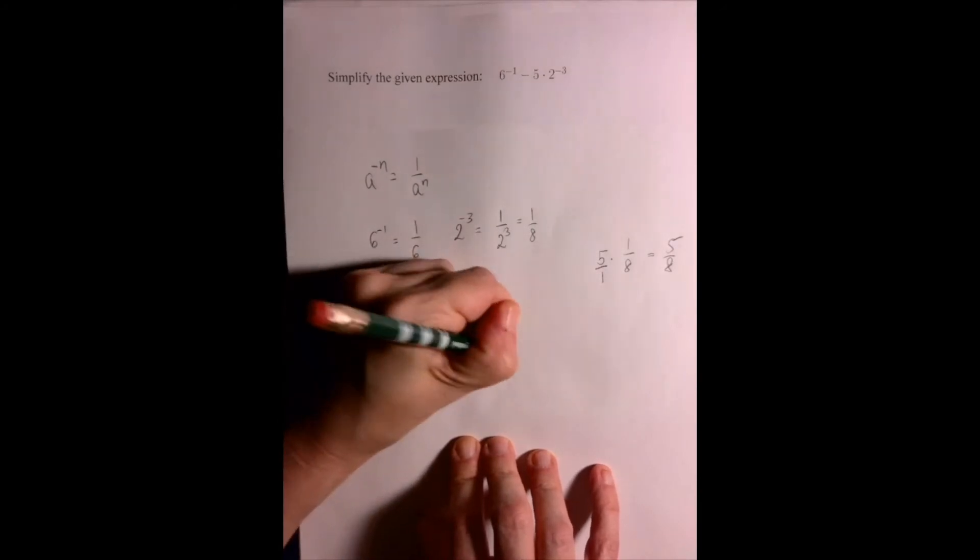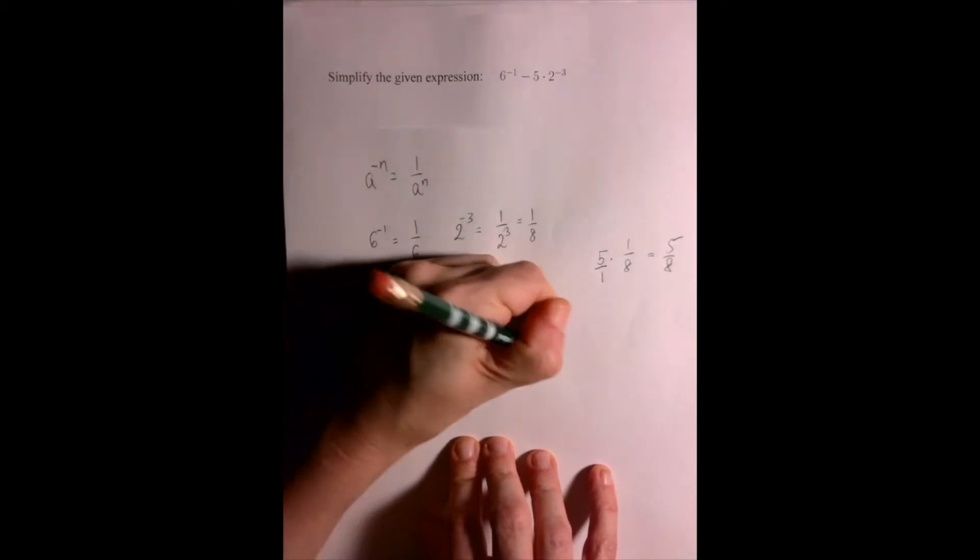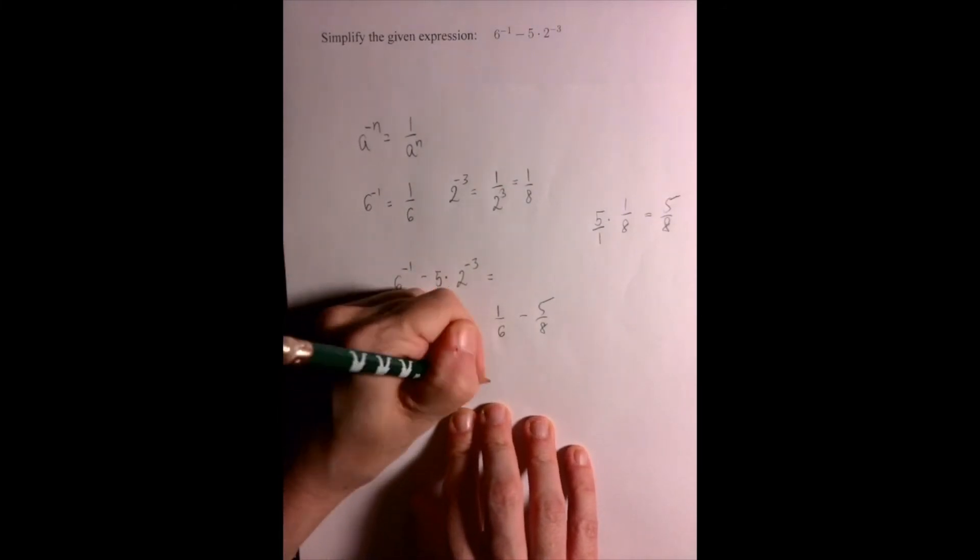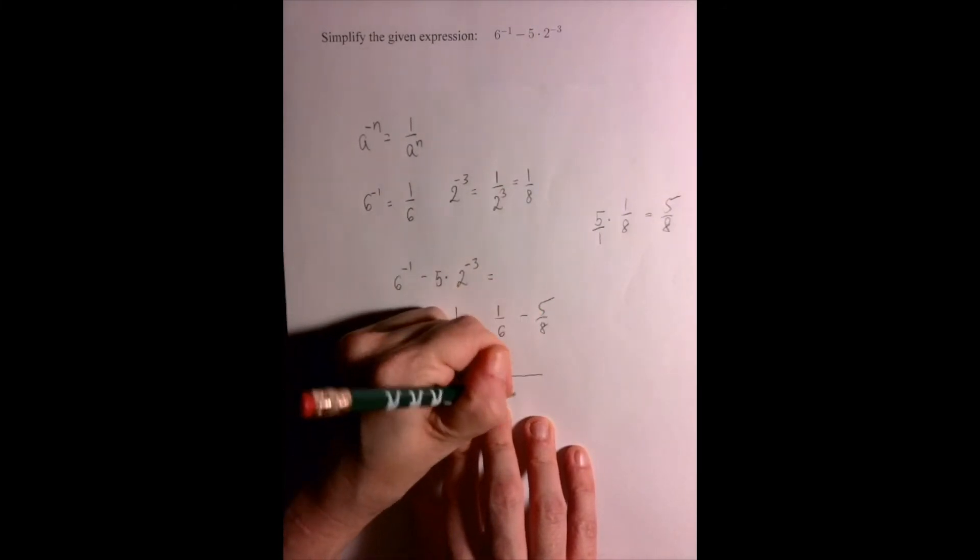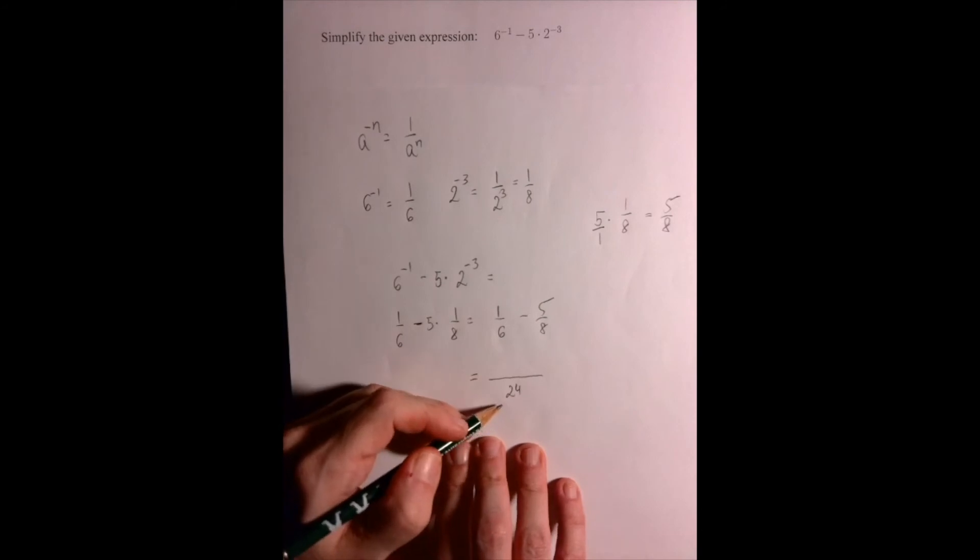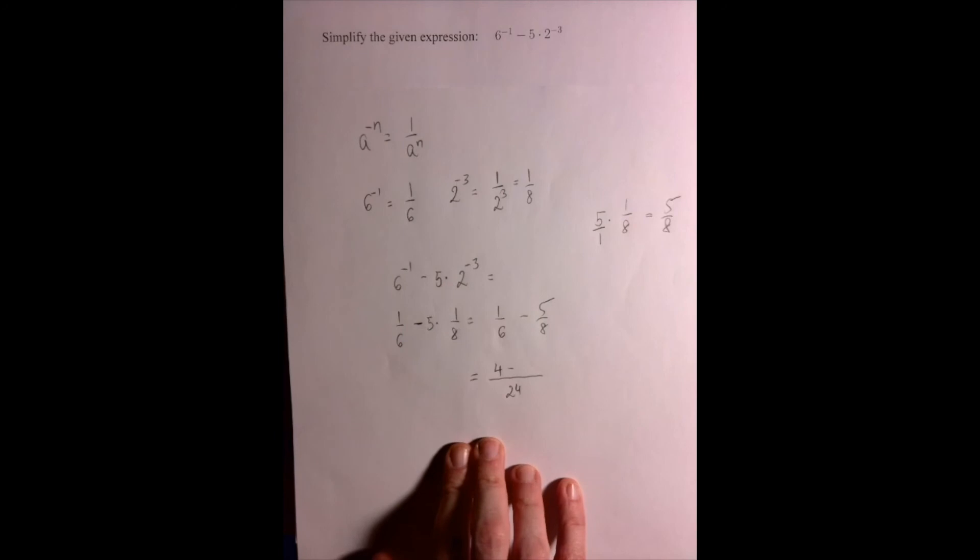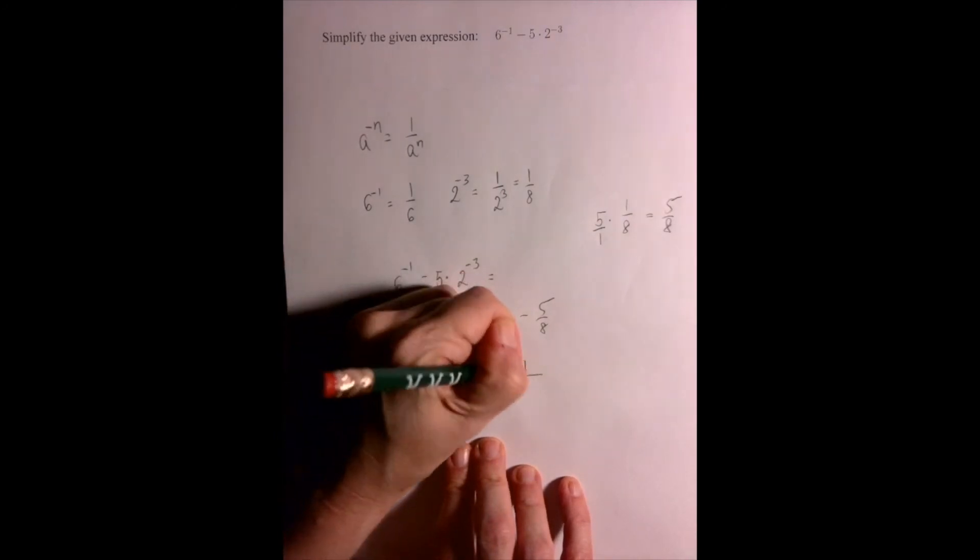And now we have the subtraction 1 over 6 minus 5 over 8. We bring to the common denominator, which is 24. 6 to 24, that was 4 times, 4 times 1 is 4. 8 to 24, that was 3 times, 3 times 5 is 15.